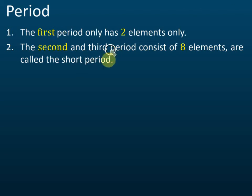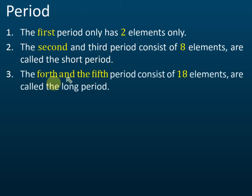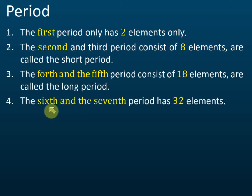The fourth and fifth periods have 18 elements each and are called long periods. The sixth and seventh periods have 32 elements each, and these are also long periods.